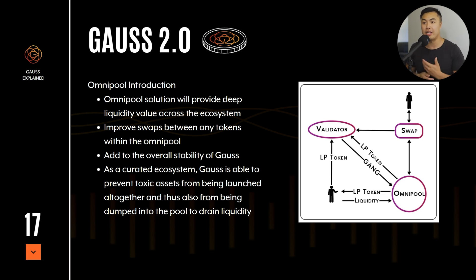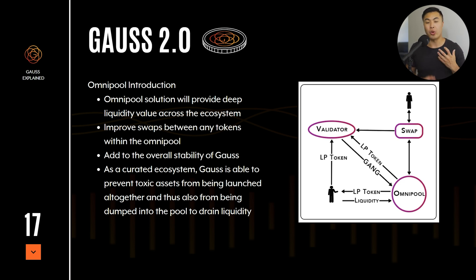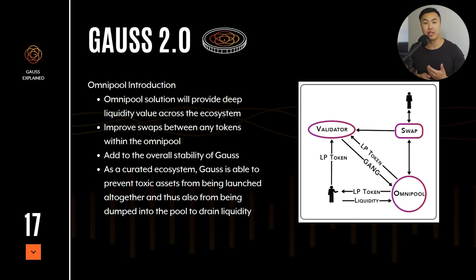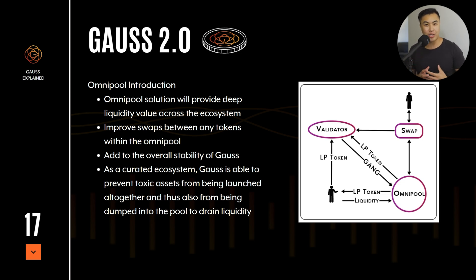One of them is the fact that it can provide deep liquidity across the whole ecosystem. A new token coming into the ecosystem doesn't have to raise liquidity because there's liquidity already there. At the same time, it's going to improve swaps between any tokens within the Omni pool and adds to the overall stability of the Goss ecosystem. It's also going to be harder for liquidity to drain, because Goss is a layer one blockchain that's vetting its tokens — so no fake or scam token can come in, drain the liquidity pool, and leave. Everything is curated and permissioned.